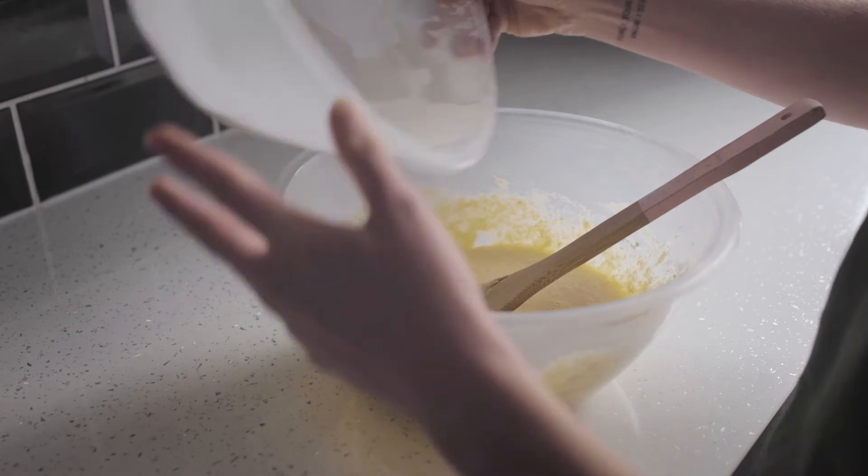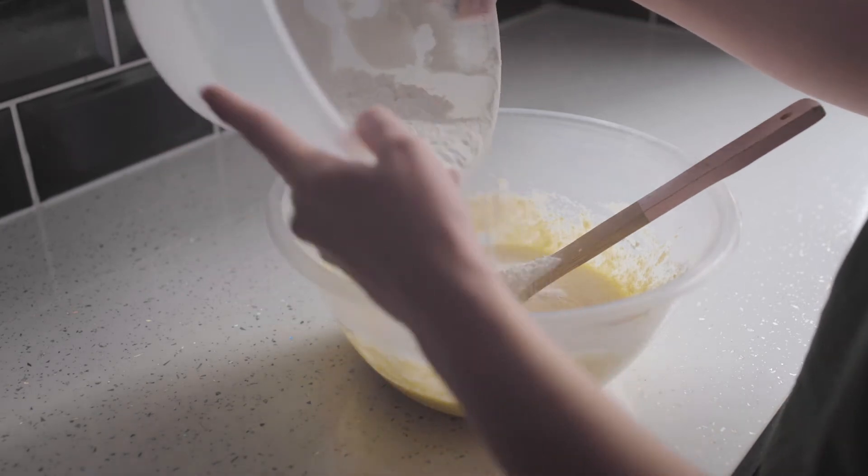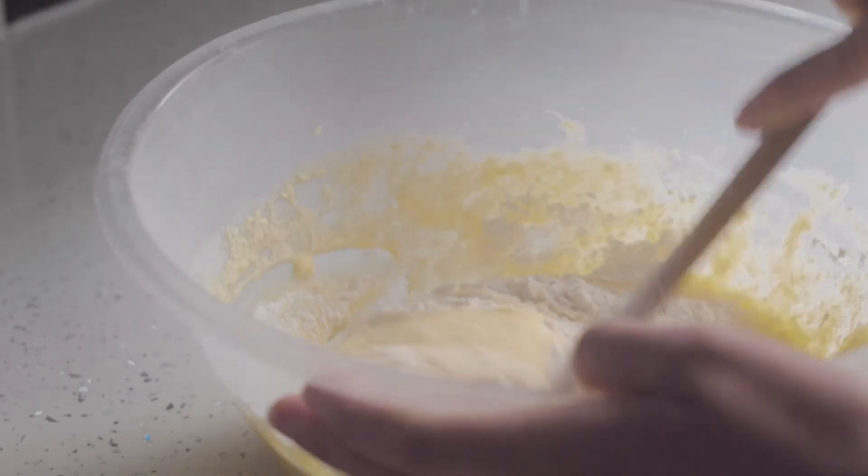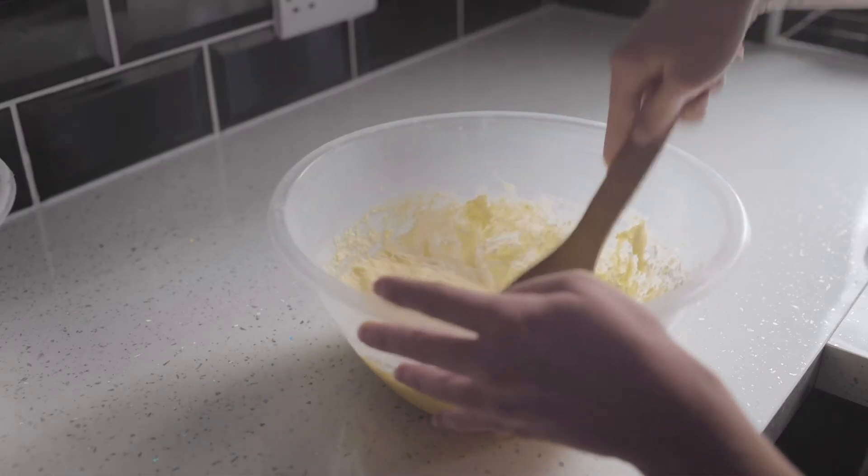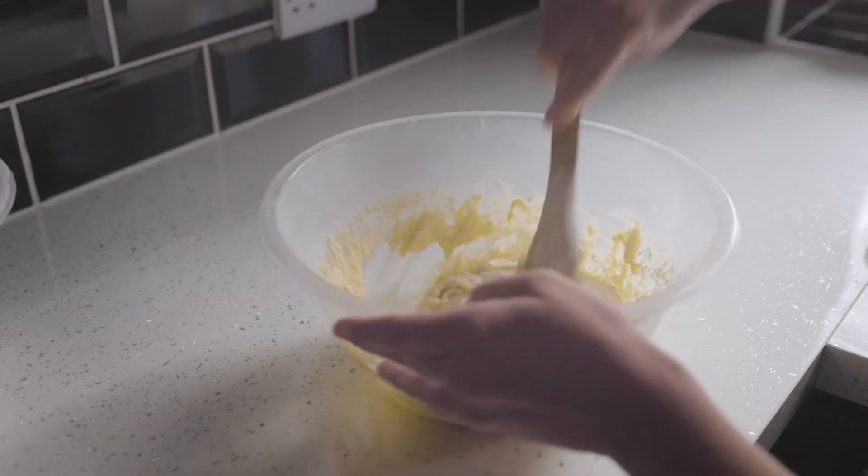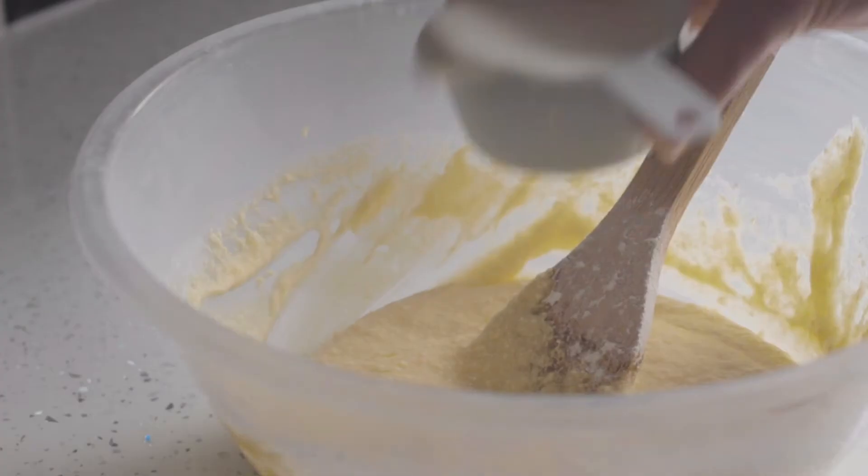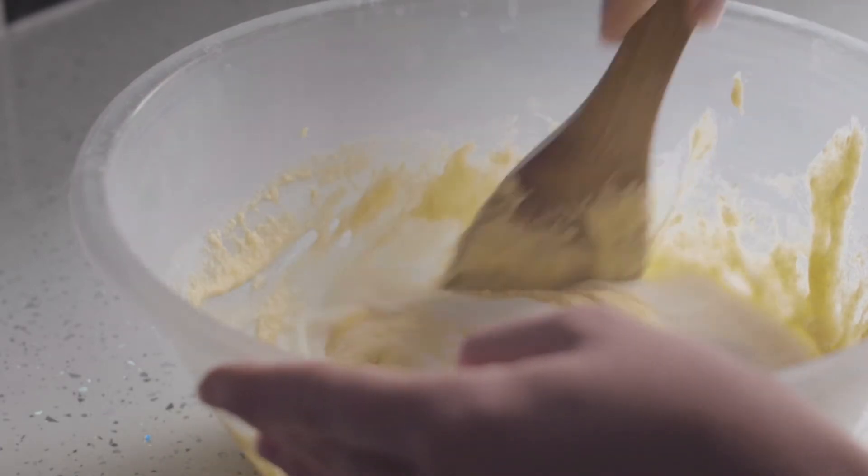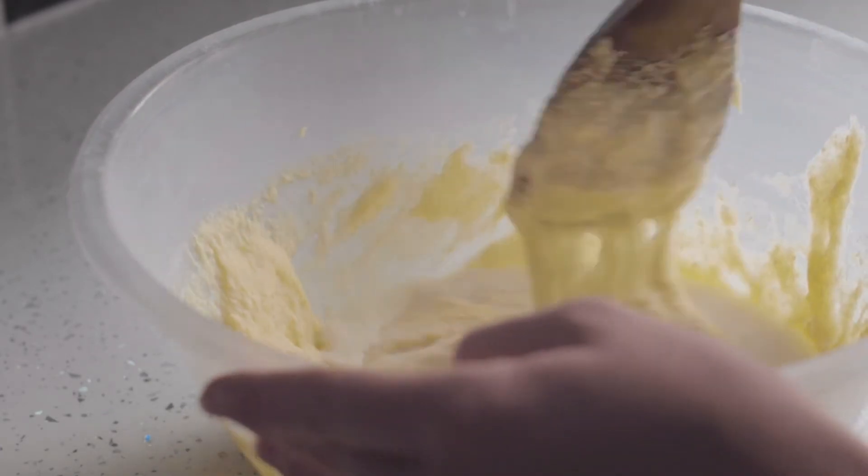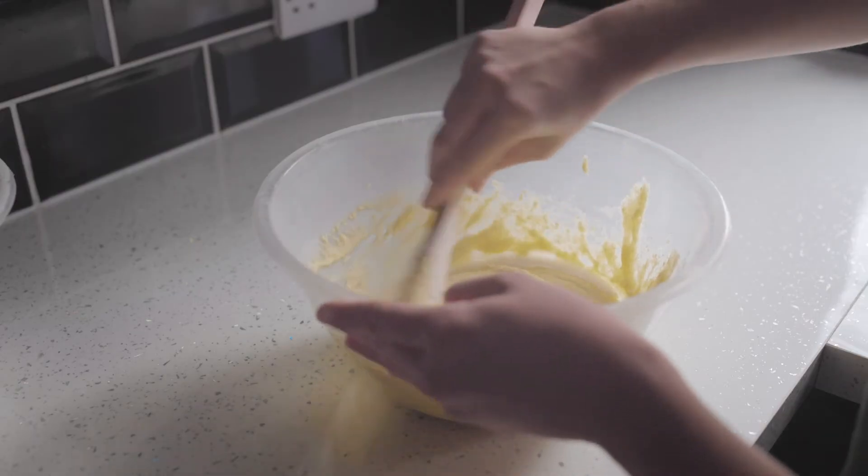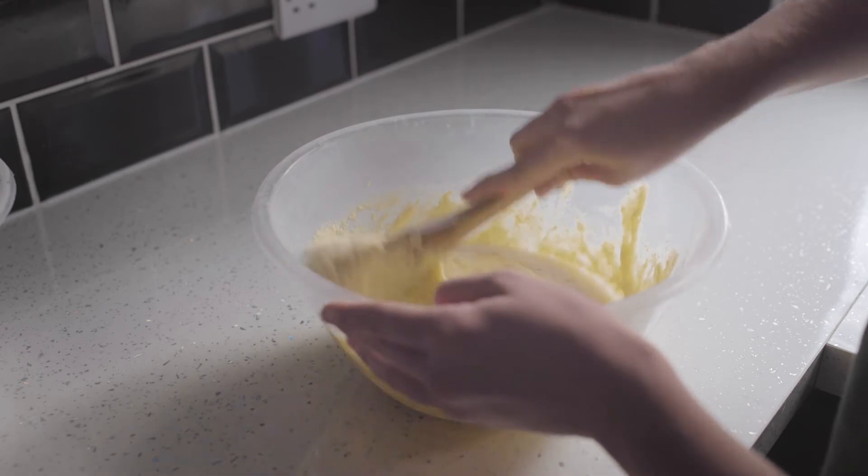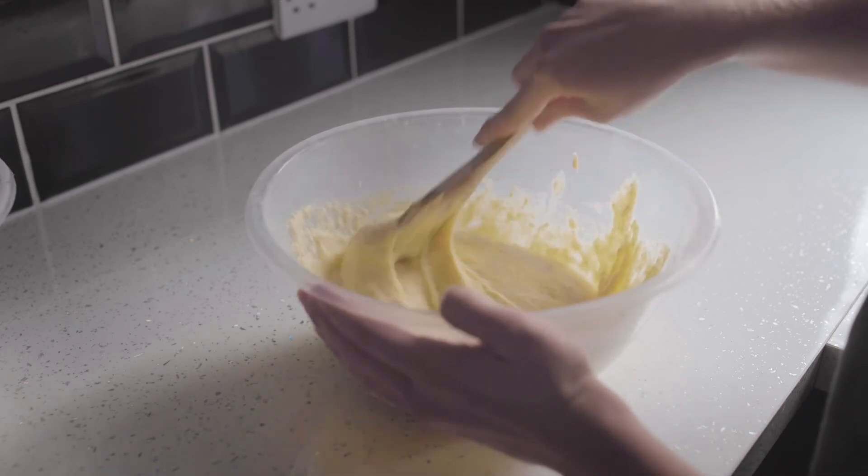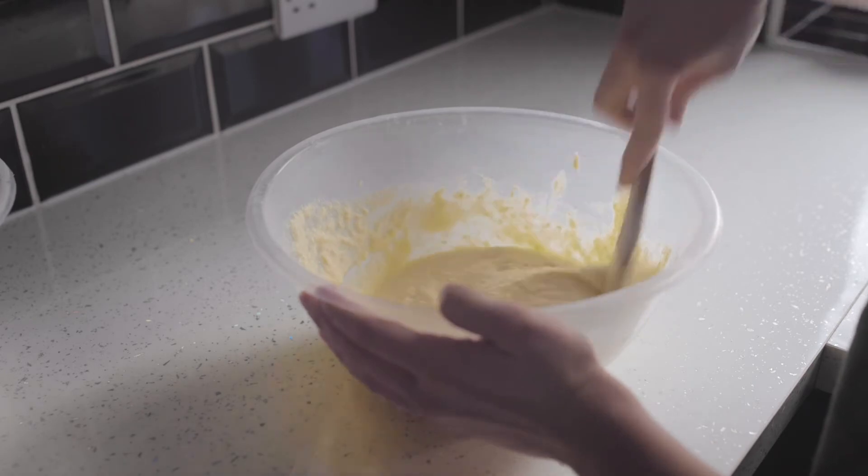Then we're going to pour half the dry mixture into the egg mixture and fold them in gently. We want to be folding so we don't break those very precious air bubbles that make a sponge a sponge so be careful not to over beat this part. Then we'll add in half the milk and repeat the folding process. After that add in the rest of the flour, fold again and then add in the rest of the milk. You'll know you've done it right if you've got a nice smooth airy cake batter.